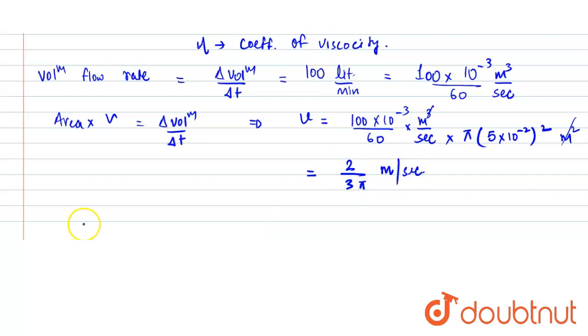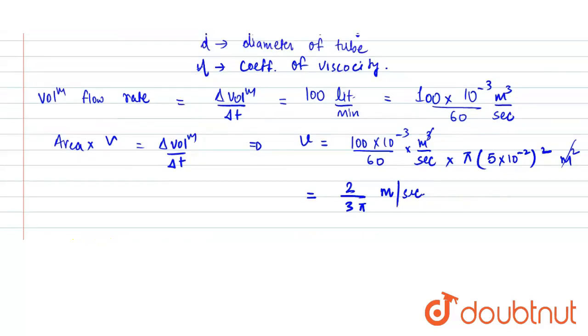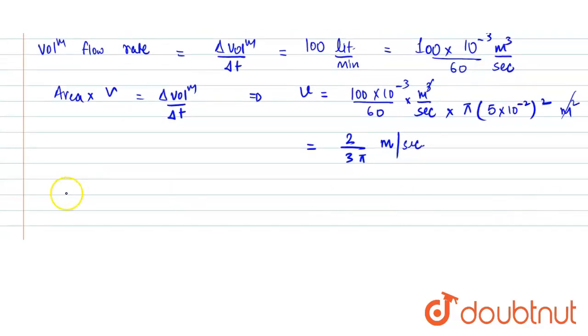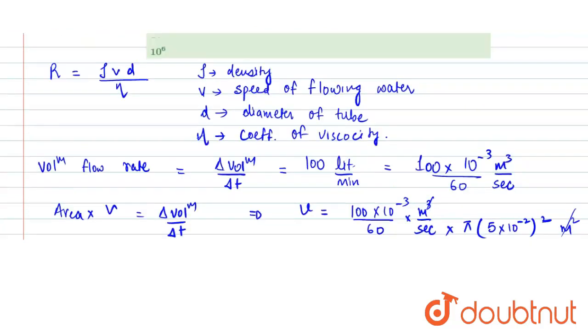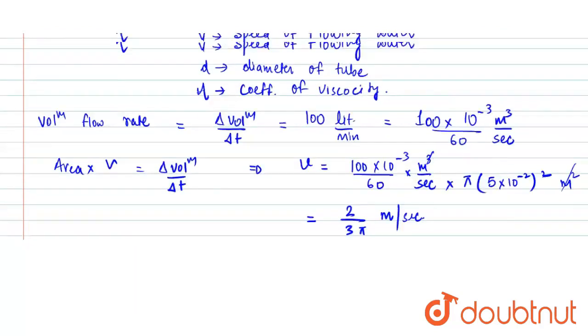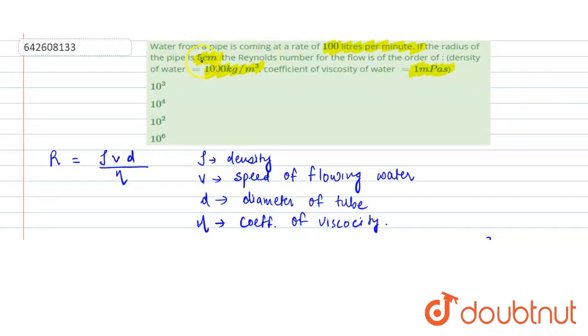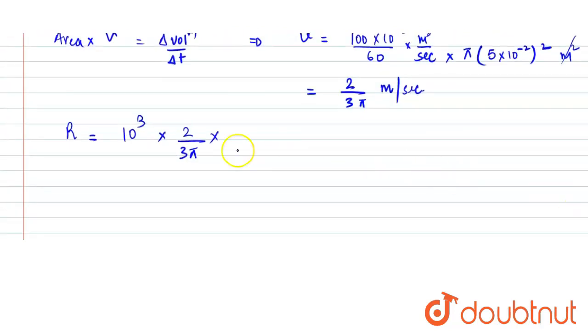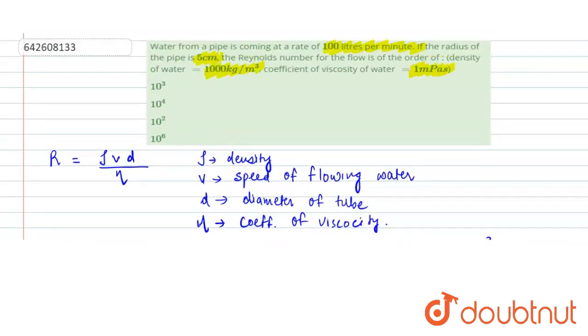Now let's write the Reynolds number. R can be written as ρvd/η. So ρ is 10³ kg per meter cube times v, which is 2/3π, times d. Since the radius is 5 centimeters, d will be about 10 centimeters or 0.1 meters, divided by η, and the value of η given to us is 1.